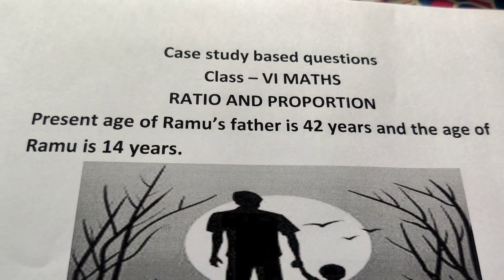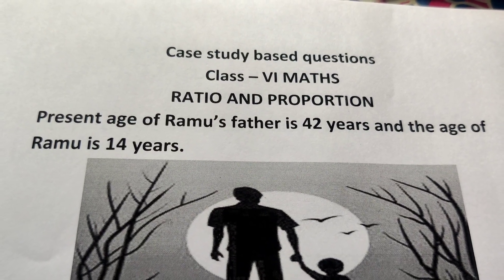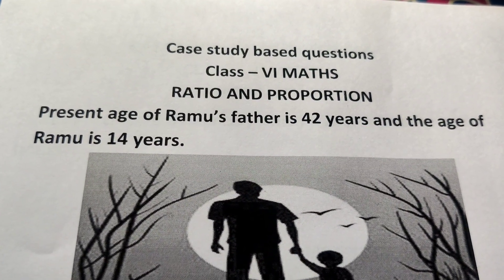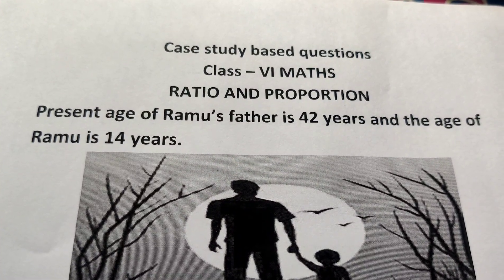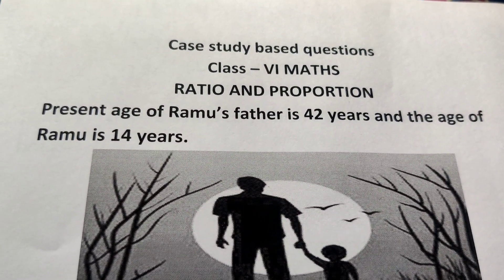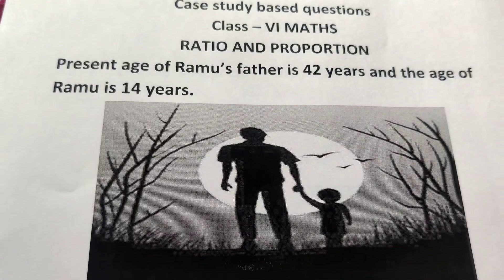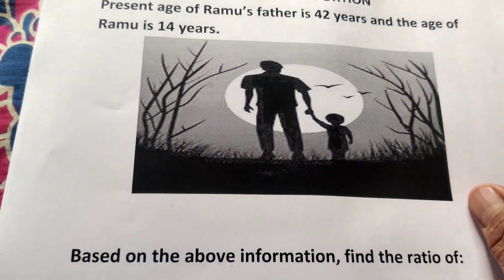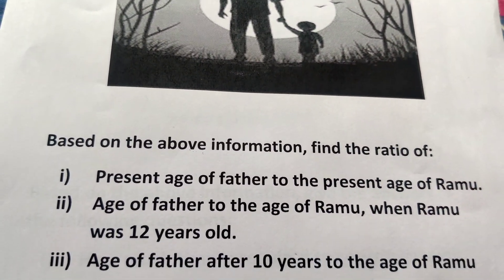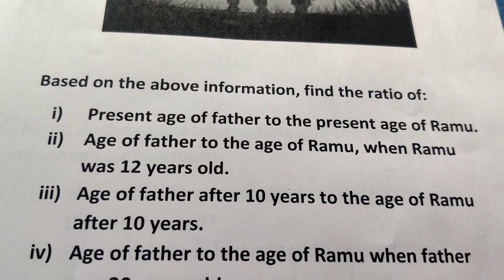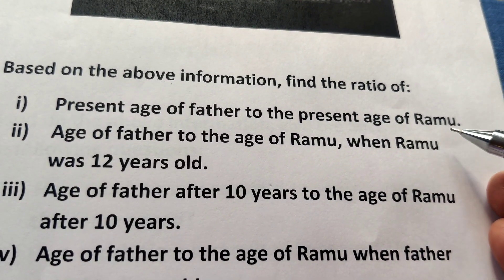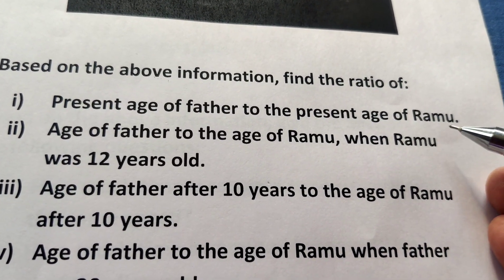This is a case study based question for Class 6 Maths, the chapter is Ratio and Proportion. The case is: the present age of Ramu's father is 42 years and the age of Ramu is 14 years. Based on the above information, find the ratio of the present age of father to the present age of Ramu.